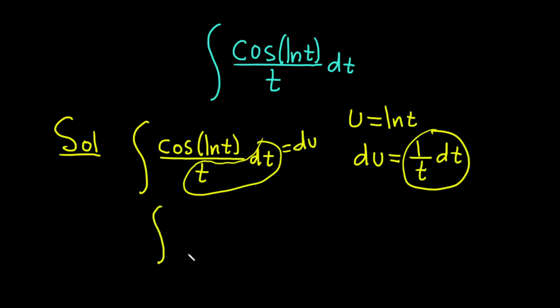Rewriting what we have, we have the integral of the cosine of u. That's because u is equal to the natural log of t. So we put a u here, and the rest of it is just du.